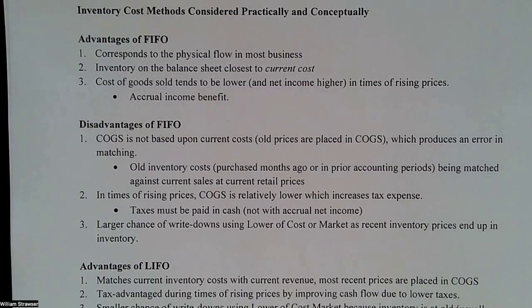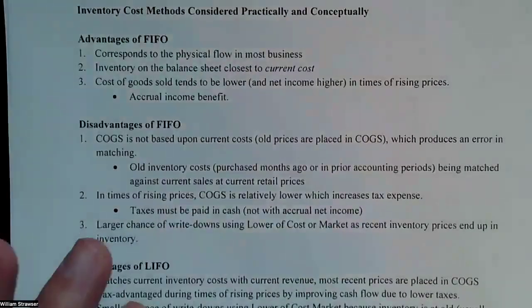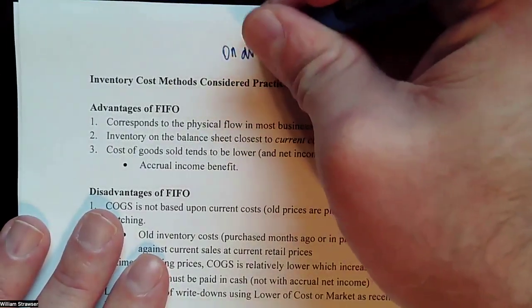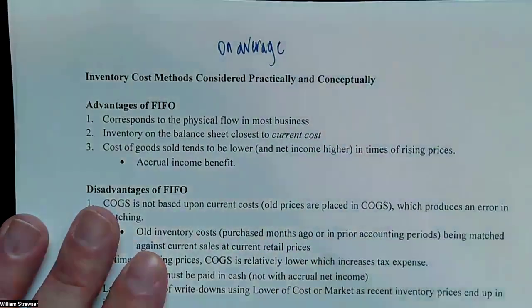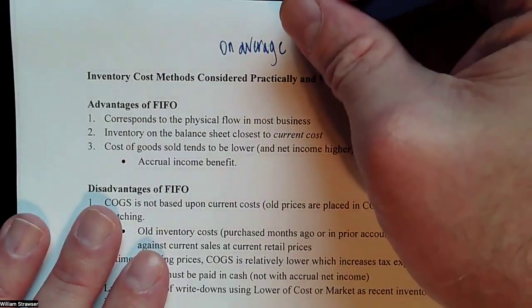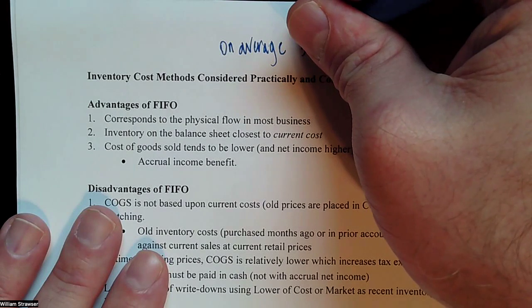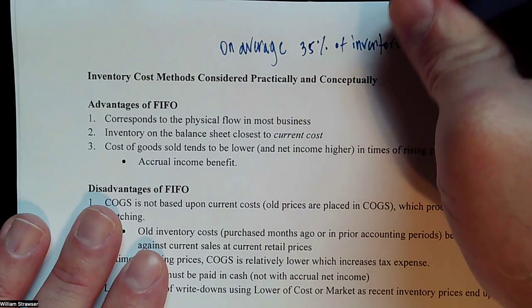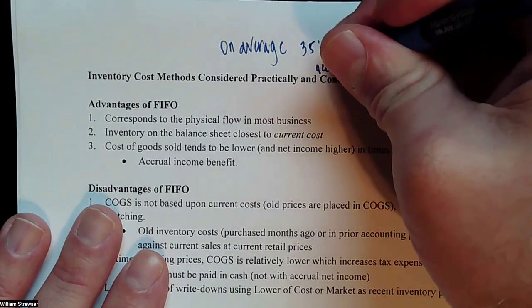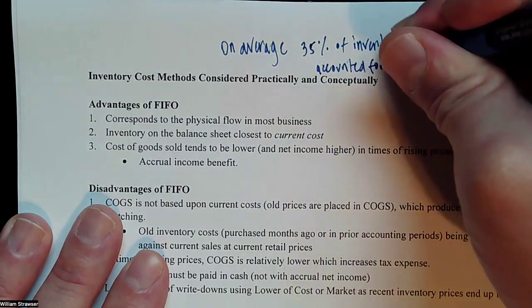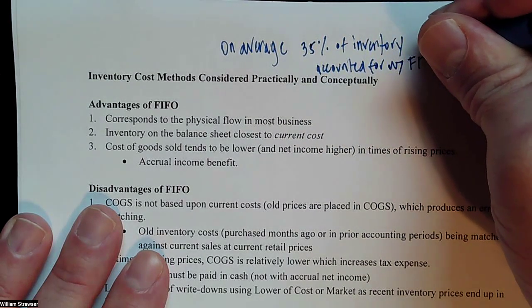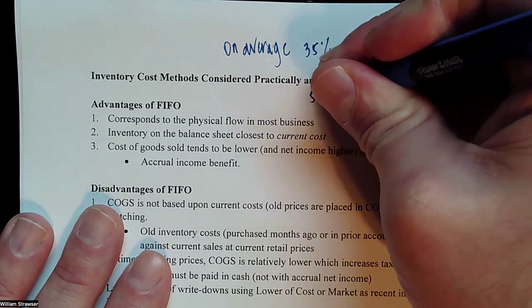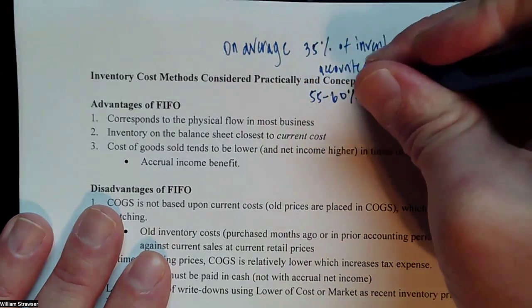The final part I want to talk about is conceptually and practically what are the advantages and disadvantages of these cost flow methods. On average, the latest time I looked this up, about 35% of all inventories are accounted for with FIFO, and about 55% up to 60% are accounted for with LIFO.